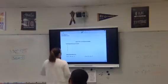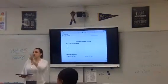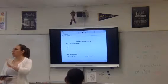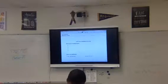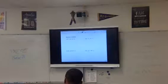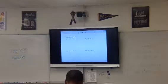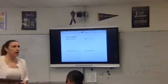Factor by grouping. So far, all we've talked about is pulling out a GCF, your greatest common factor. Now we're going to look specifically at what it looks like when we factor something with four terms. So basically, I'm teaching you step two.